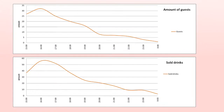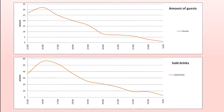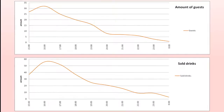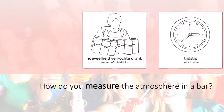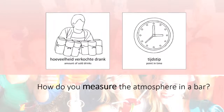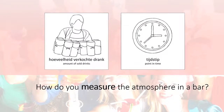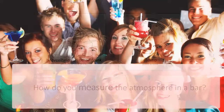Results showed that regardless of the time, guests ordered one drink per 30 minutes. In other words, one knows the amount of guests solely from monitoring the amount of sold drinks. This gave the impression that only time and amount of sold drinks give enough information to measure the atmosphere.